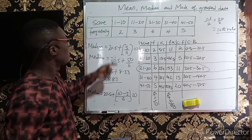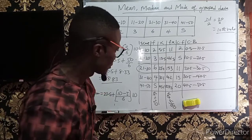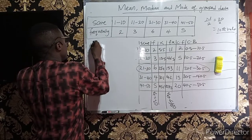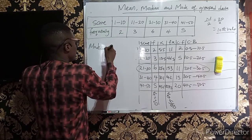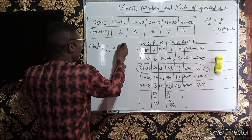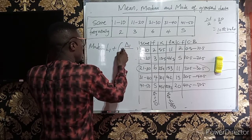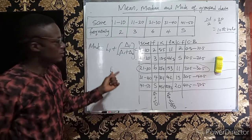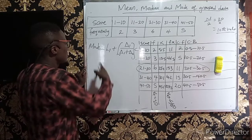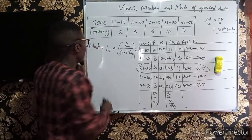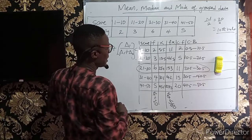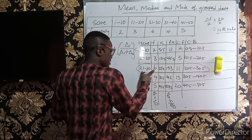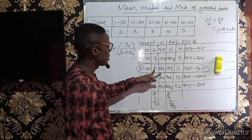Having got the median, let us proceed to get the mode. The formula for mode is: mode = L1 + [d1 / (d1 + d2)] × c, where L1 is the lower class boundary of the modal class. The modal class is the class with the highest frequency.